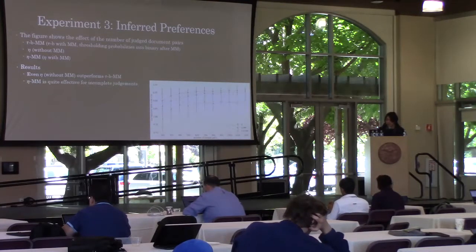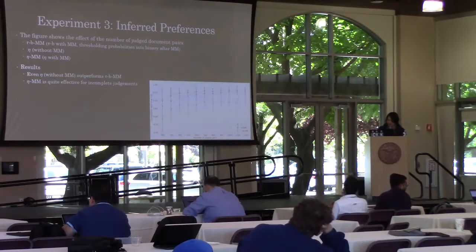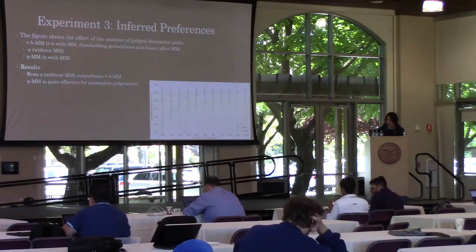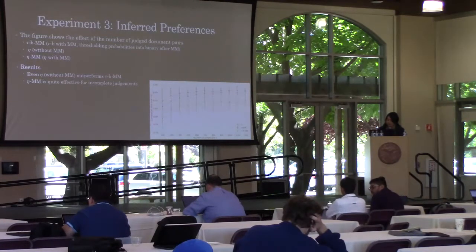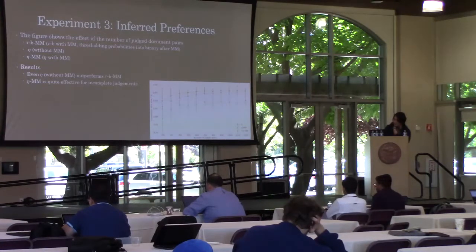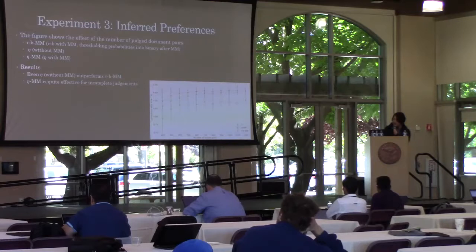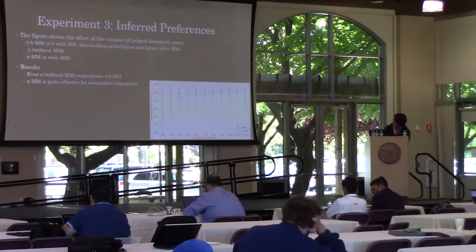We investigated the effect of the number of observed data. We compared three methods: tau with MMR algorithm, eta without MMR algorithm, and eta with MMR algorithm. Eta and eta with MMR algorithm are quite effective for incomplete judgments.